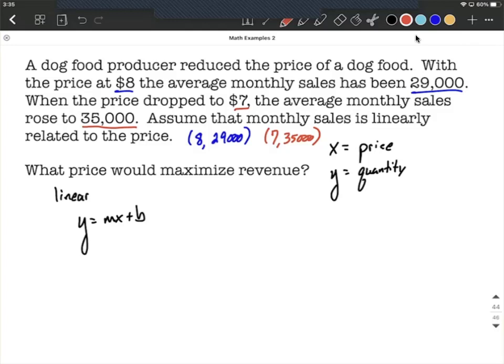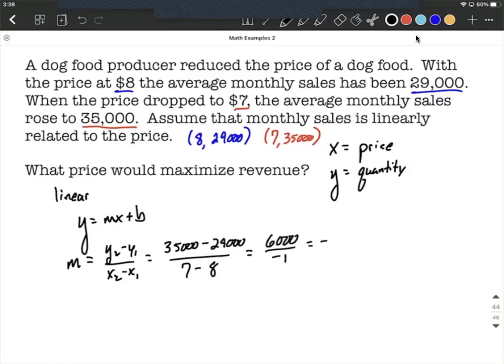To get this linear relationship set up, we're going to need the slope of this line. So m is the slope formula, y2 minus y1 over x2 minus x1. Let's go ahead and say 35,000 minus 29,000 over 7 minus 8. This will give us 6,000 over negative 1 or negative 6,000.